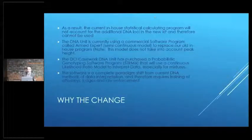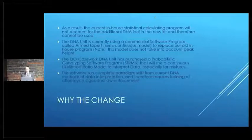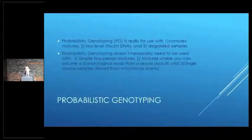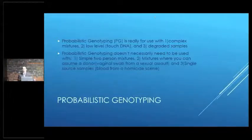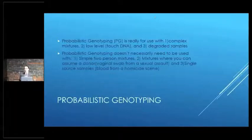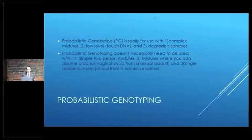This likelihood ratio reporting is really a paradigm shift from what we've been doing before with CPI. It deals with complex mixtures, low-level touch DNA samples, and degraded samples. These are the problematic samples where we would be using probabilistic genotyping to report results. It does not need to be used with simple two-person mixtures where you can assume a donor — for instance, a vaginal swab with semen where we subtract out the victim's DNA profile and elucidate the semen donor.